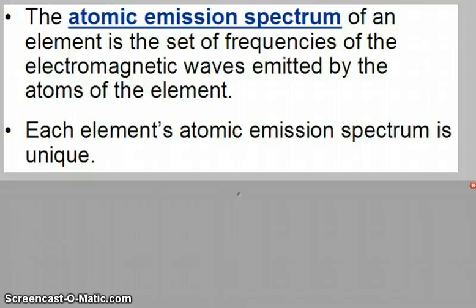And so, we see here that the atomic emission spectrum of an element is the set of the electromagnetic waves emitted by the atoms of that element. And we'll see them as colored lines. So, each element's atomic emission spectrum is unique. And oftentimes, you'll hear them called the fingerprints of the element.